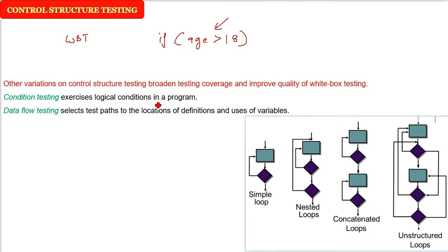Data flow testing. We are talking about the data, it can be in simple variable, it can be data structure. So it selects the test path in the location of definitions and uses of variables. For example, this int a, a will be private, public, protected, where it will be used, it will be global, it will be local. Testing of all these is data flow testing.